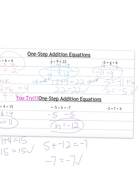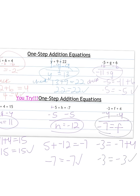Last one: negative 3 equals F plus 4. Subtract 4 from both sides. Negative 3 minus 4 equals negative 7. Plug this back in to check: negative 7 plus 4 gives me negative 3. That works, so F equals negative 7.